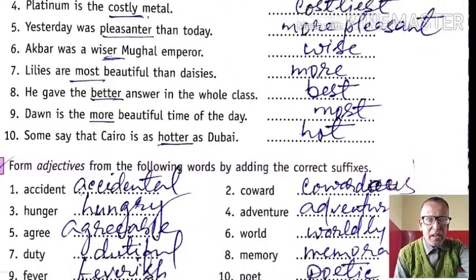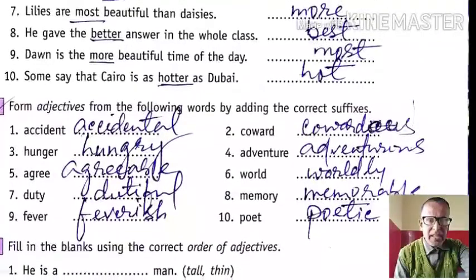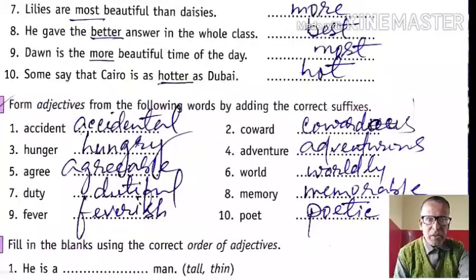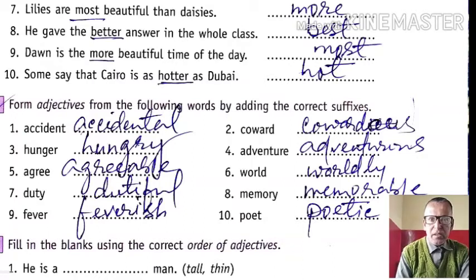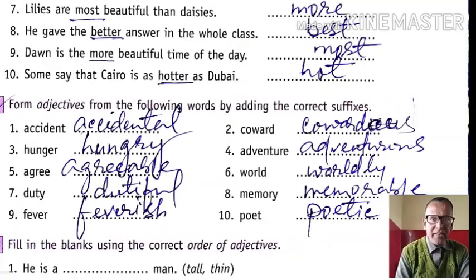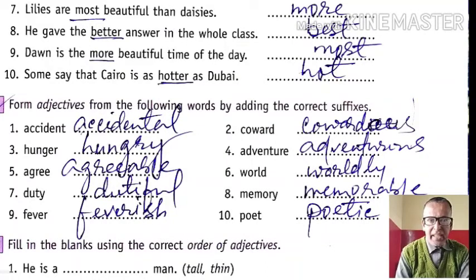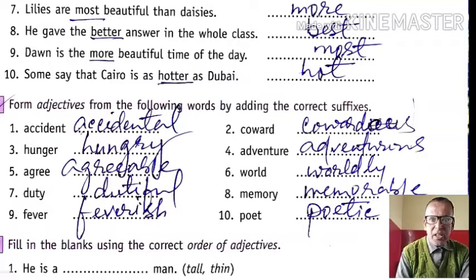Now we will form adjectives from the following words by adding the correct suffixes. Accident — accidental. Coward — cowardly. Hunger — hungry. Adventure — adventurous. Agree — agreeable. World — worldly. Duty — dutiful. Memory — memorable. Fever — feverish. Poet — poetic.